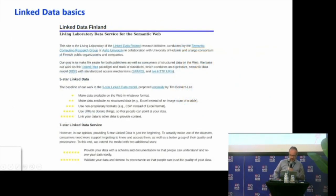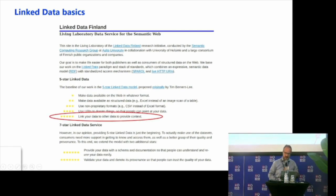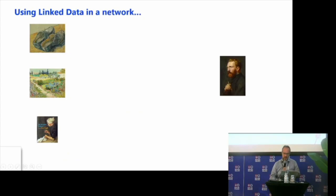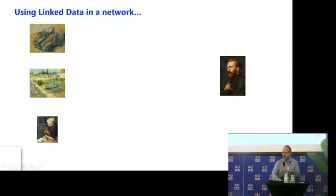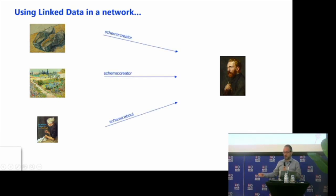Going deeper into linked data, we all know the five-star model by Tim Berners-Lee. Our talk is mainly about the five-star level: linking your data to other data to provide context — that's really important. To give you an example of using linked data in the network: on the left you see some creative works, two paintings and a book, and on the right the artist Van Gogh. There are links, of course, between all those entities. The painting by Van Gogh — Van Gogh is the creator of the paintings — and the book is about Van Gogh. So you can make those links and give real meaning to them with linked data.